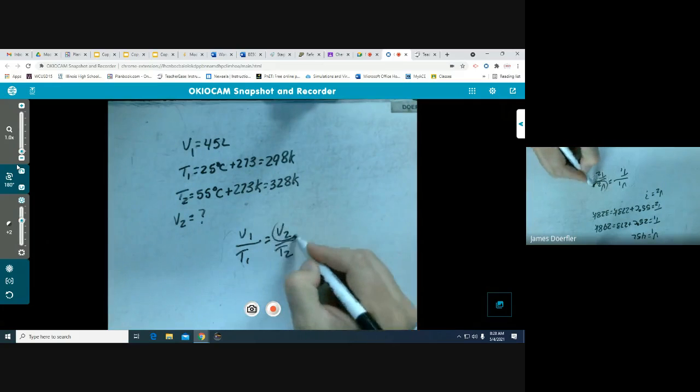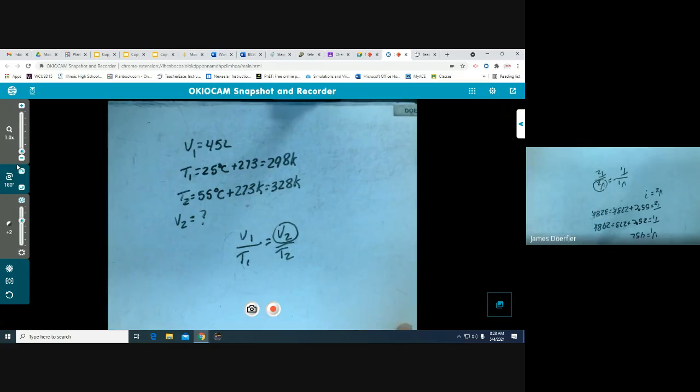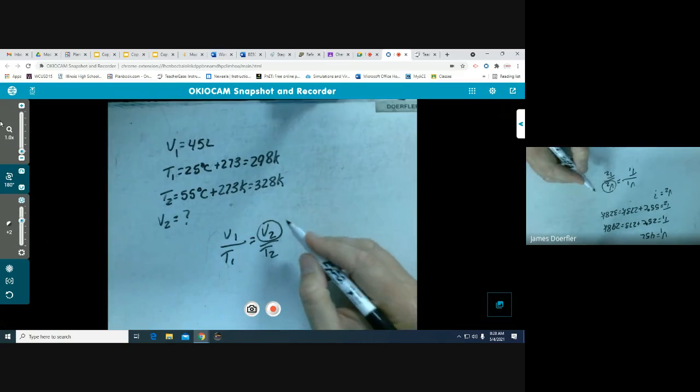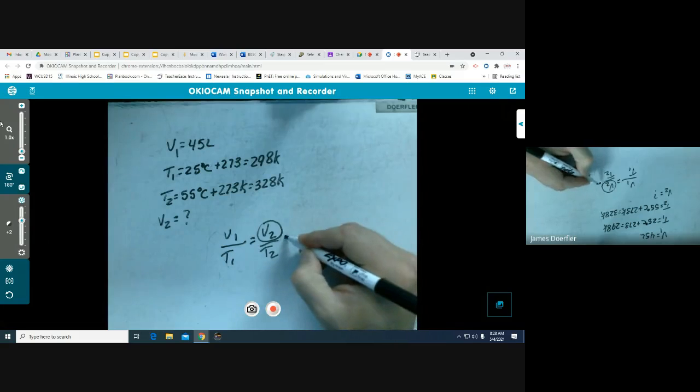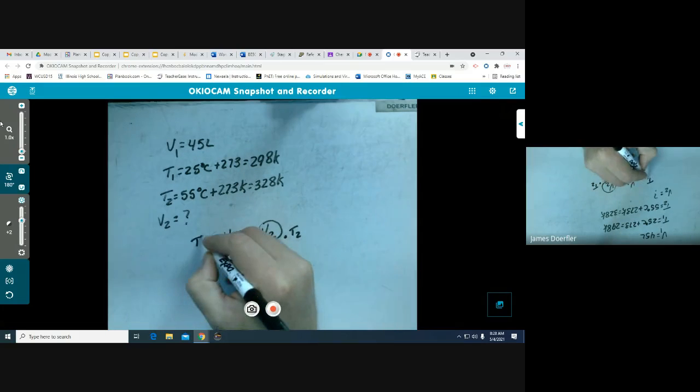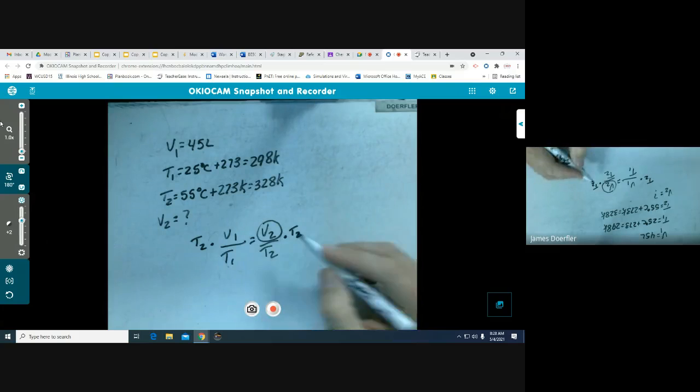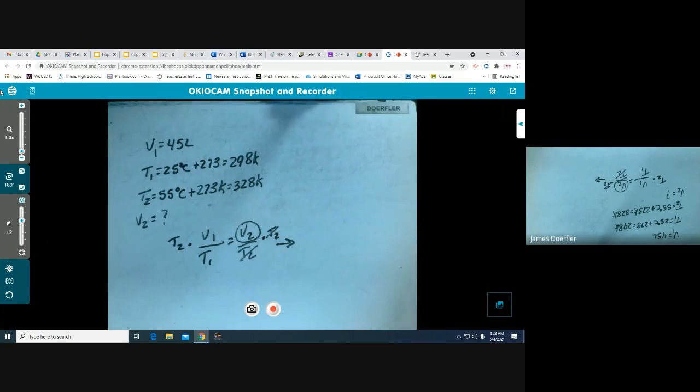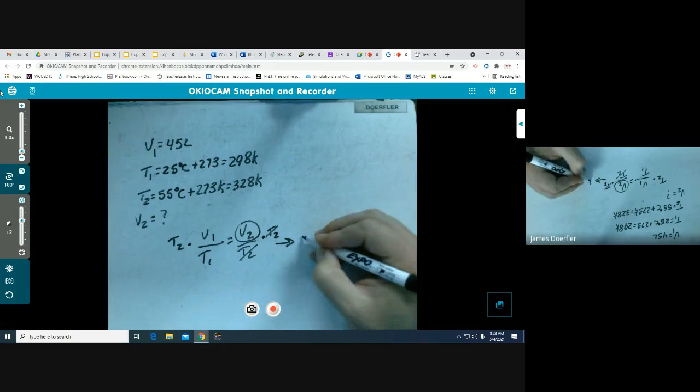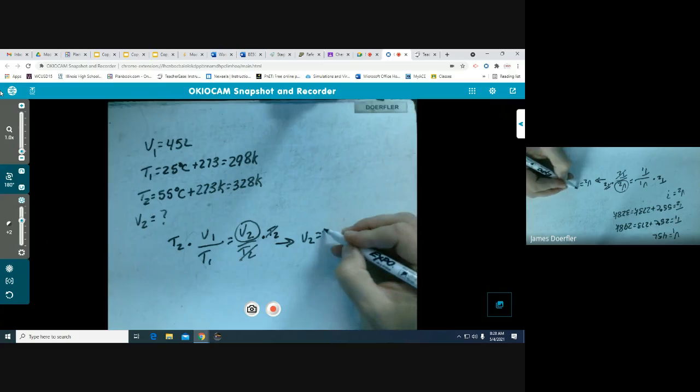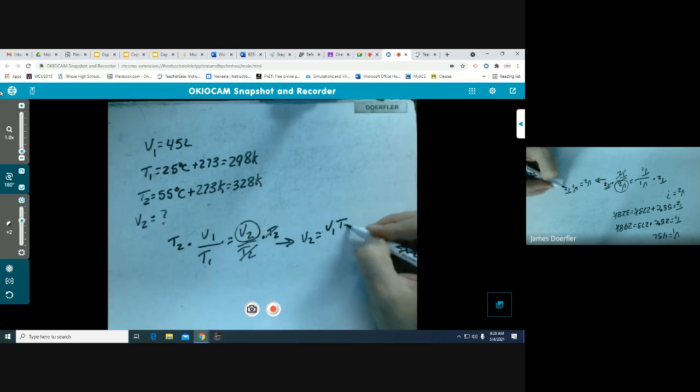So pressure is being held constant, which means we're going to use Charles's law. Charles's law: V1 over T1 is equal to V2 over T2. And the V2 is what we're trying to solve for. So I need to rearrange this formula to solve for V2, and I'm going to do that by multiplying both sides by T2 so I can get it out of the denominator. This allows for those units to cancel and now I have the formula set up of V2 is equal to V1 times T2 over T1.